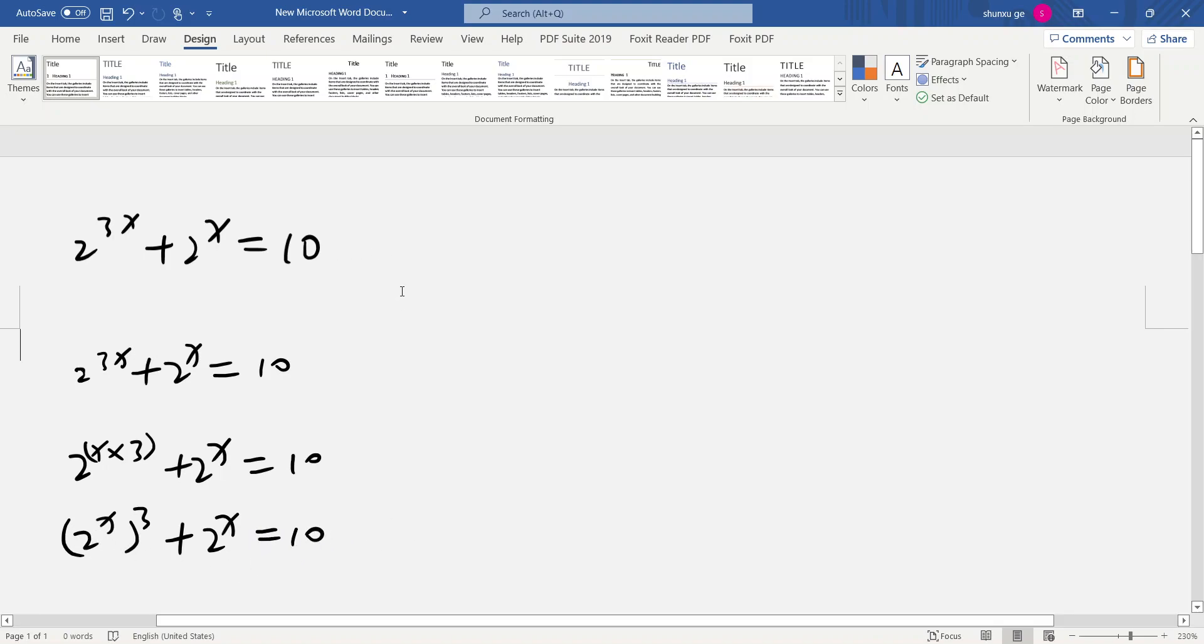So we can write here, let 2^x = t. So t^3 + t equals 10.